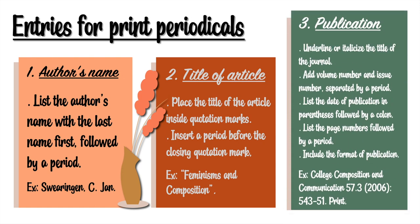Number three, publication. Underline or italicize the title of the journal. Add volume number and issue number, separated by a period. List the date of publication in parentheses, followed by a colon. List the page numbers followed by a period, and include the format of publication. Example: College Composition and Communication 53.3 (2006): 543–51. Print. Don't forget the colon and the period.